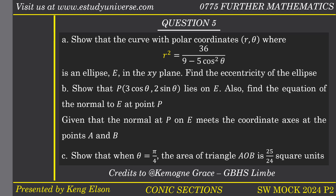The question was on conic sections and it reads: show that the curve with polar coordinates r, theta, where r squared equals 36 divided by (9 minus 5 cos squared theta), is an ellipse in the xy plane. Find the eccentricity of the ellipse. Part B: show that the point (3 cos theta, 2 sin theta) lies on the ellipse E, and also find the equation of the normal to E at the point P. Part C: given that the normal at P meets the coordinate axes at points A and B, show that when theta equals pi over 4, the area of triangle AOB is 25/24 square units.